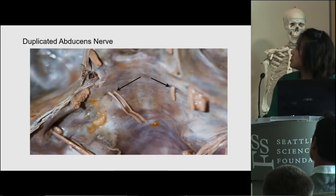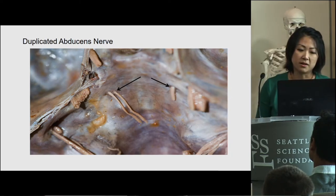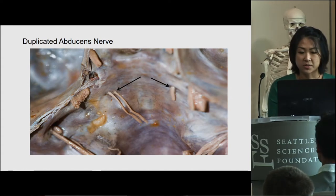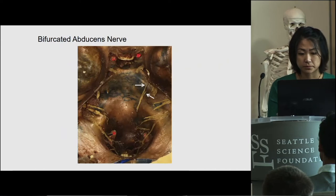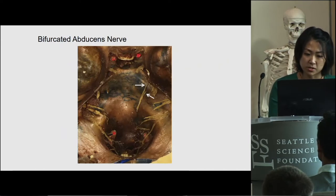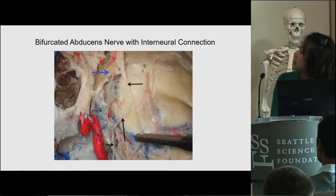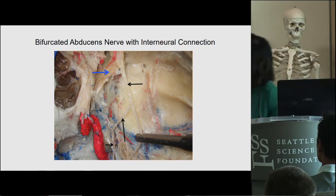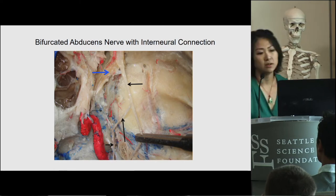Here are some images to give you orientation. This again is the clivus, with the ocular motor nerves, trigeminal nerves, and the facial and vestibulocochlear nerves. On the left side, you can see a duplicated abducens nerve. This picture is a bit unclear whether it's a branching or duplication because the brainstem has been removed. In this next image, it's clearly a bifurcated abducens nerve on the right because you can see it originates from a single strand and then splits into two. This last example shows a bifurcated abducens nerve with an interneural connection — the vertical arrow is the interneural connection, the two strands are the bifurcated abducens, and the blue arrow denotes the lateral rectus muscle.